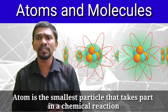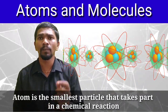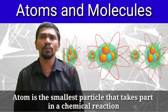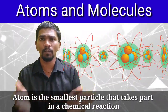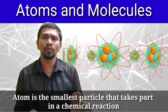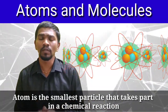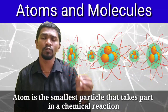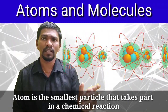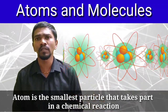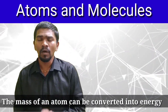An atom is the simplest particle that takes part in a chemical reaction. Atoms can join with other atoms to form molecules. Similarly, molecules can join to form new elements or compounds. The key point is that the atom participates in the reaction — the atom is the smallest particle in a chemical reaction.